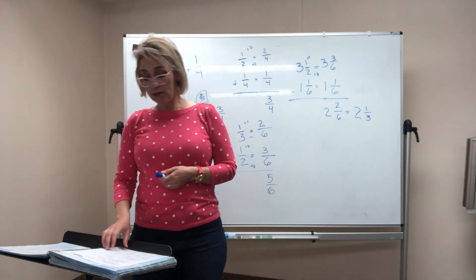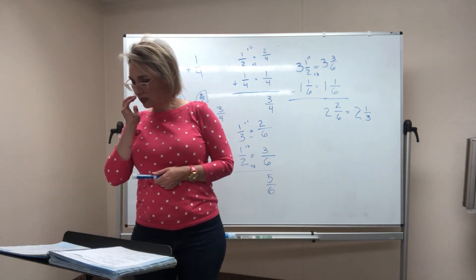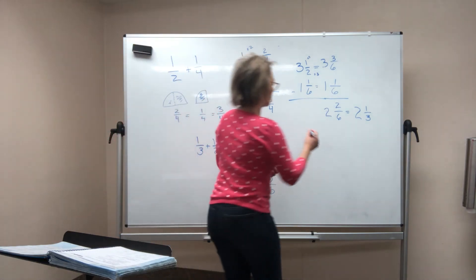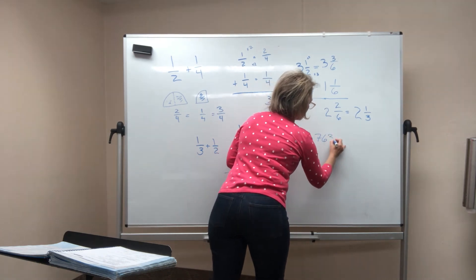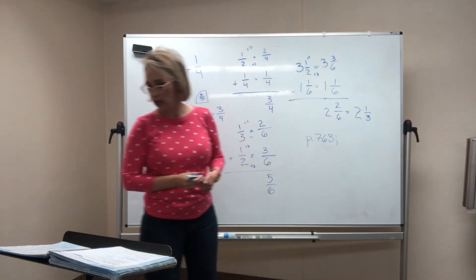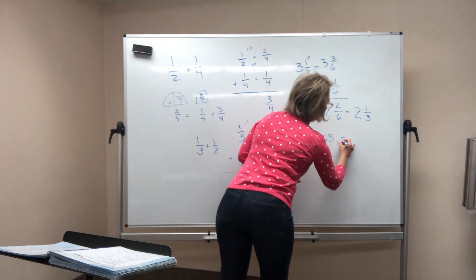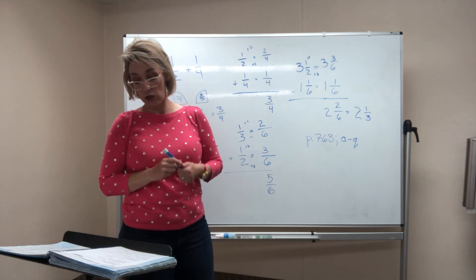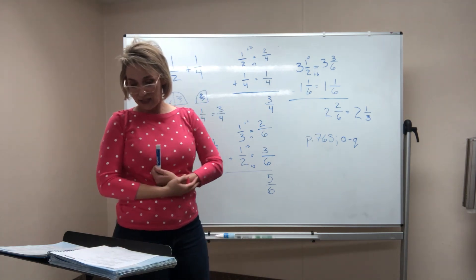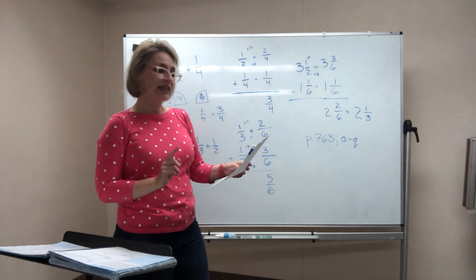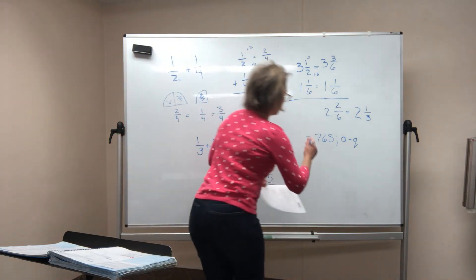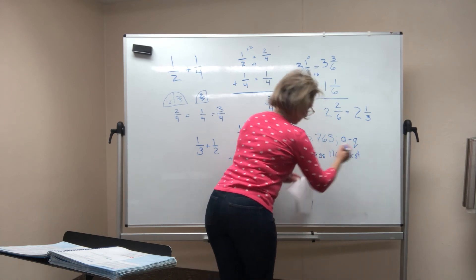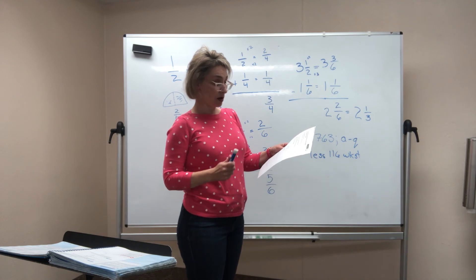Now you have a lot more problems today than you did yesterday. You have the lesson practice, which is page 763, and it is quite a bit of the page. It is A through Q. We don't usually go to Q, but there is through Q. Lots to practice on there, and this is good. This is going to be a bit of work. And your lesson 116 worksheet.